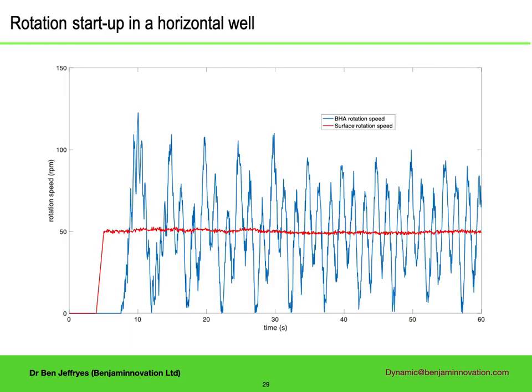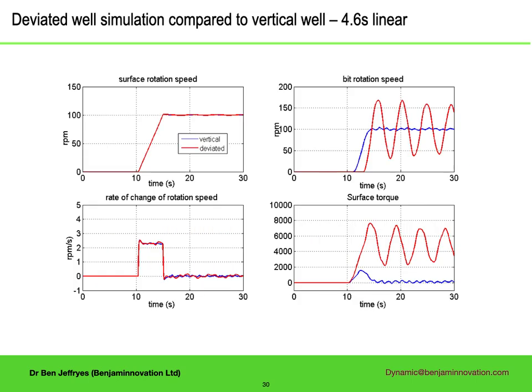That was all in a vertical well, but what about in a deviated well? Let's repeat the simulation for the 4.6 second startup, comparing vertical and deviated. The surface rotation speeds look very similar, but the bit rotation speeds are very different. The vertical one suppresses the oscillation; the deviated one certainly does not. The other difference is the time to first movement downhole — for the vertical well it is close to the acoustic travel time from surface to downhole, but for the deviated well it is much longer.